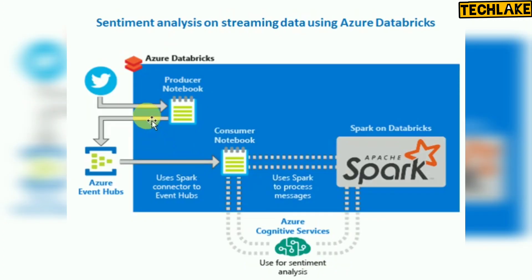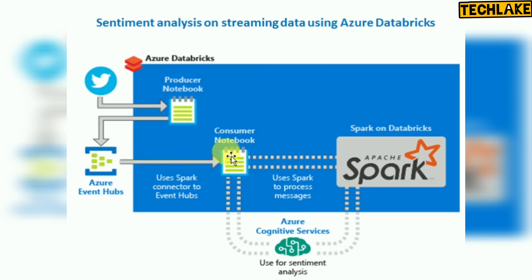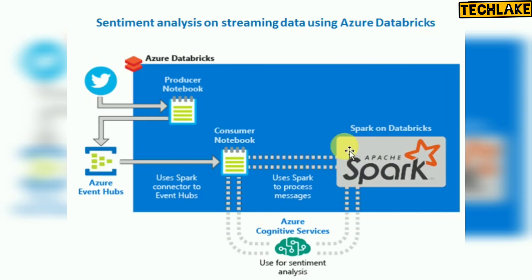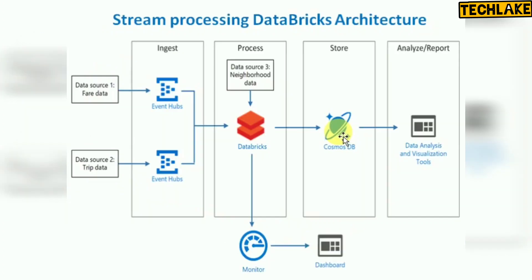For a Twitter streaming scenario, you create one notebook whose API connects to Twitter. That same notebook triggers Azure Event Hubs, which downloads the live data. Then another consumer notebook is created to do all the processing including ML implementation. The processed data can be stored in Azure SQL DB, Delta Lake, or any database, and accessed by reporting tools.